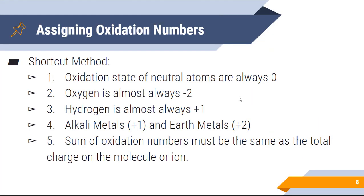Now there are a couple of shortcut methods we can use. The shortcut method is a list of rules: the oxidation state of neutral atoms is always zero; oxygen is almost always minus two; hydrogen is almost always plus one — remember the 'almost always,' that does come into play. Alkali metals are plus one; alkaline earth metals are plus two. Also keep in mind that the sum of oxidation numbers must equal the total charge of the molecule or ion.